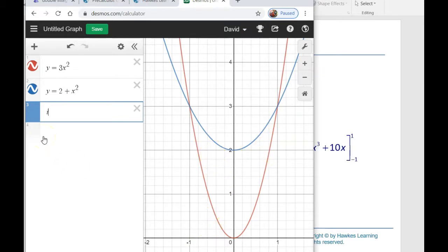In Desmos you just type 'int' for an integral. I'm going to make x go between negative one and one. When I allow x to range between that, I type 'int' again. The y's always have red on the bottom and blue on the top. So 3x squared is always on the bottom and 2 plus x squared is always on the top.